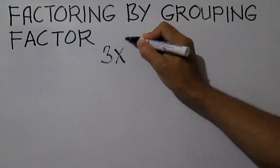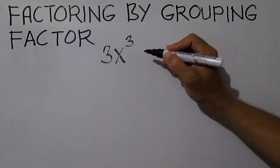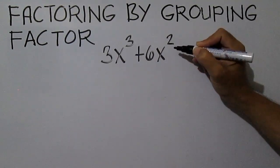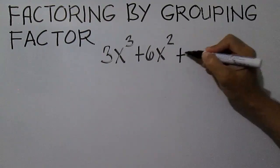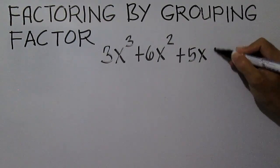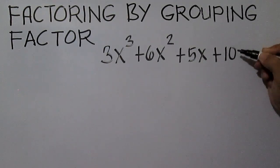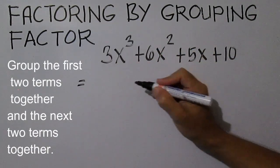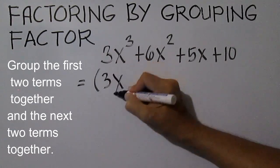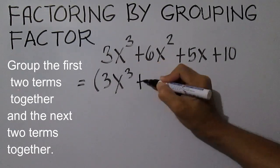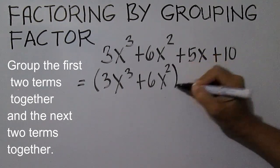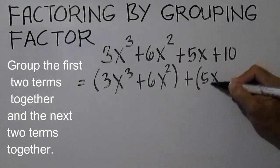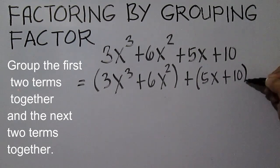Factor 3X cubed plus 6X squared plus 5X plus 10. Group the first two terms together and the next two terms together: the quantity 3X cubed plus 6X squared, plus the quantity 5X plus 10.